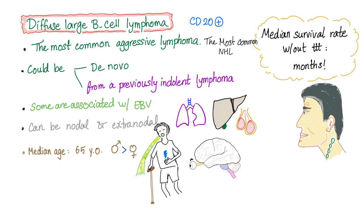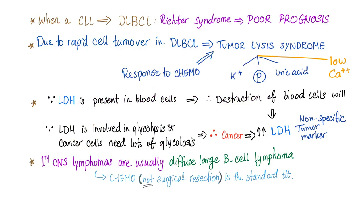Diffuse large B-cell lymphoma is associated with EBV and can be nodal and extranodal, including the lungs, liver, testicles, brain, eye, and GI tract. The median age of presentation is 65-year-old male. If CLL becomes diffuse large B-cell lymphoma, this is called Richter syndrome. Due to rapid cell turnover, you can have tumor lysis syndrome.